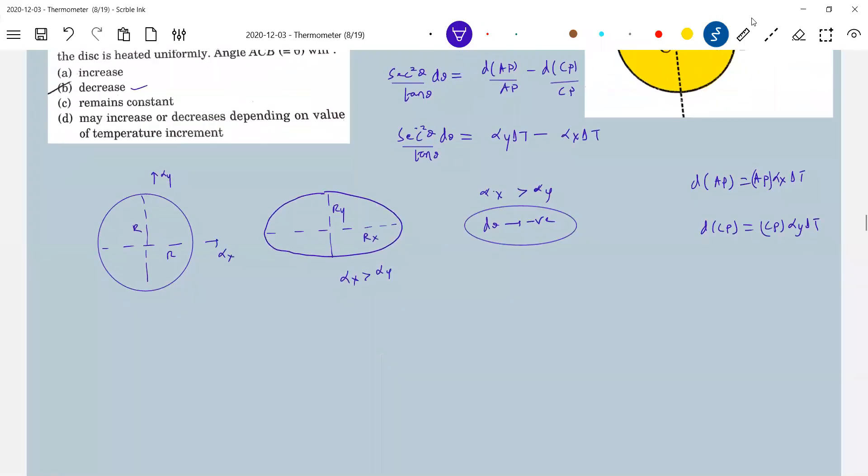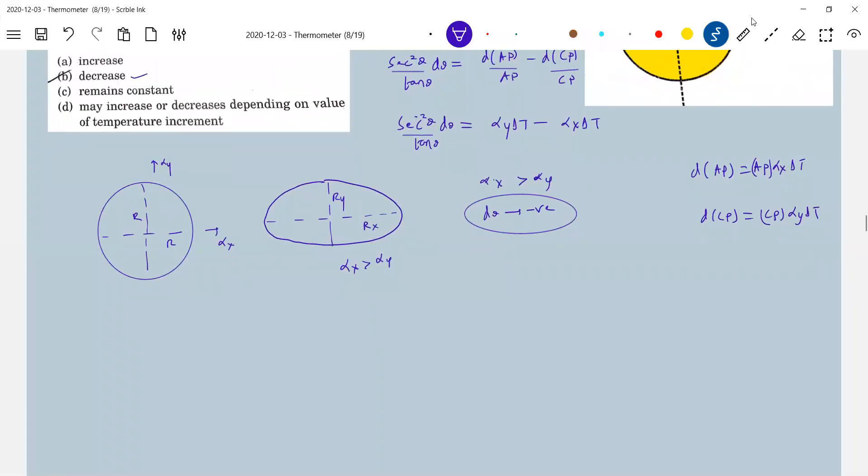Same thing if it is really r dash, r dash. This will happen when alpha x equal to alpha y. Do make observation. This is at T1 degrees Celsius, T2 degrees Celsius. What is r dash? Should we go to r alpha delta theta?